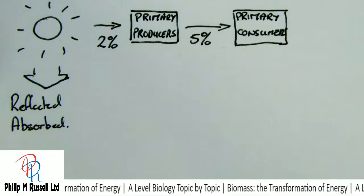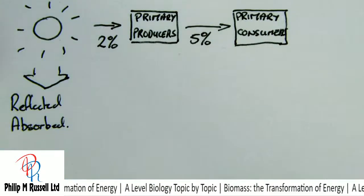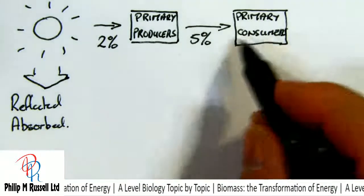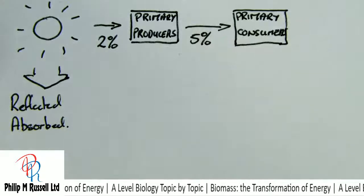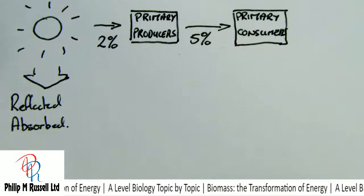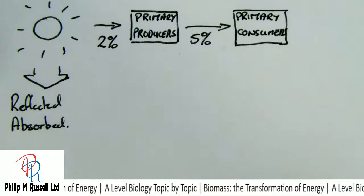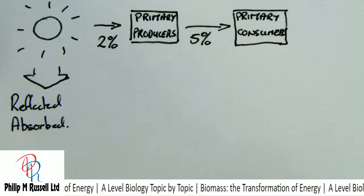Plants aren't very efficient. If a plant is green, it absorbs blue and perhaps red light, but it doesn't absorb green — so all that green light is wasted. Plants really ought to be black if they were fairly efficient. These primary producers are fed upon by the primary consumers — the herbivores — and most of them take about five percent, maybe a little bit more of the energy.